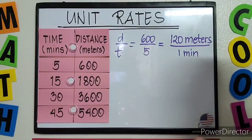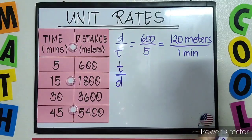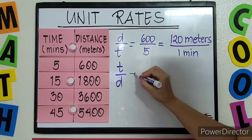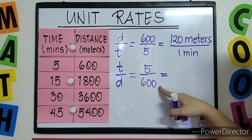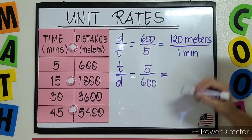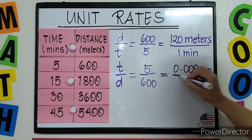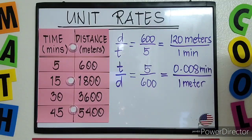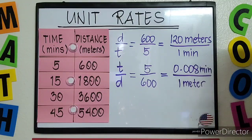The first unit rate is 120 meters per minute, meaning the distance traveled in 1 minute is 120 meters. For the second unit rate, it's the opposite — time over distance. We're checking how many minutes per 1 meter. Plugging in the values: time is 5 over 600. 5 divided by 600 gives us 0.008, so the second unit rate is 0.008 minutes per 1 meter.